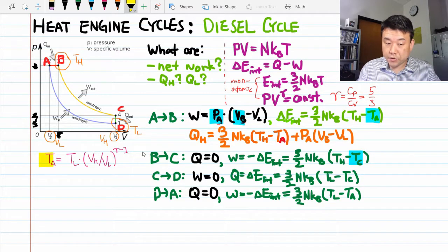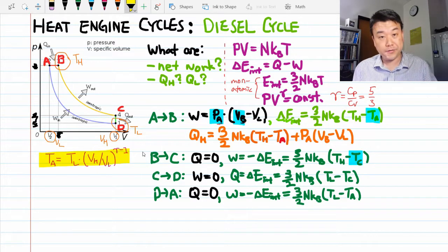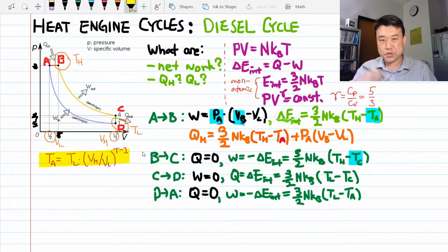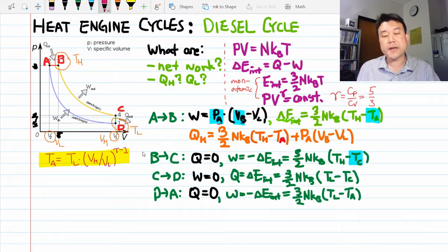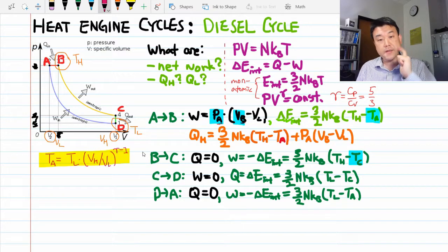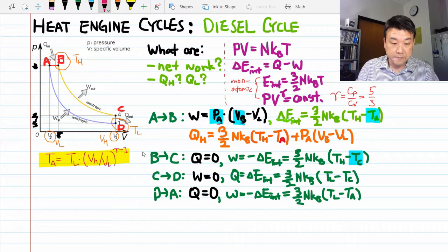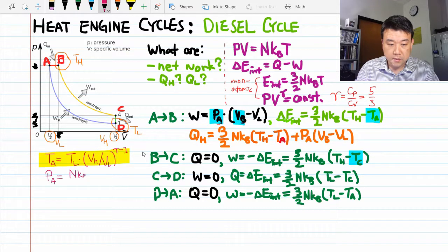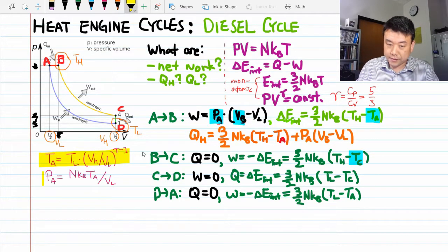Now treating this temperature at A as a known quantity, I'm going to express one of the other unknowns. This is all going to be chained together. So the next quantity I can figure out easily is pressure at A because now I know the volume and temperature. I can use the ideal gas law to say pressure at A is equal to Nk T_A, which now I know, over V_L.